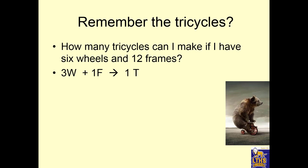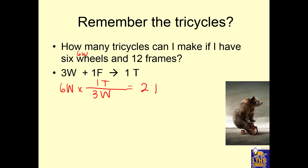Remember tricycles? We need something for bears to ride on, so we have to make tricycles. Here's the balanced equation for making tricycles. If I have six wheels and 12 frames, I have two amounts of reactants. I've got to figure out which one of these two reactants gets used up and how many tricycles I can get. Well, if I have six wheels, I need three wheels for each tricycle, and I'll be able to make two whole tricycles.